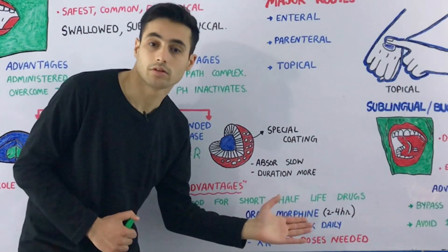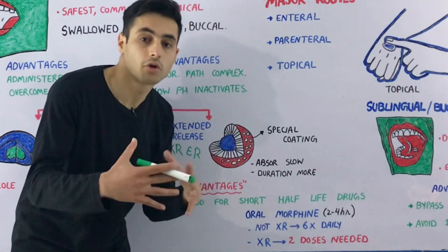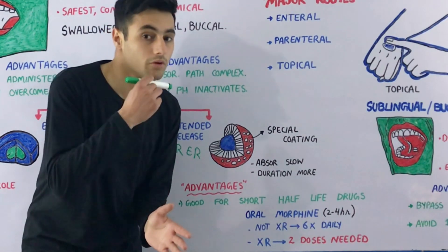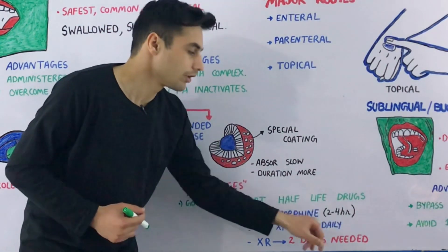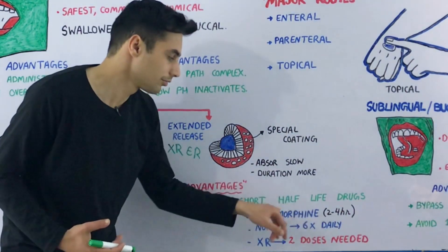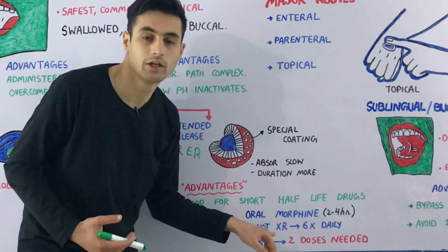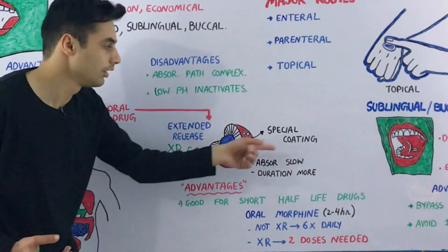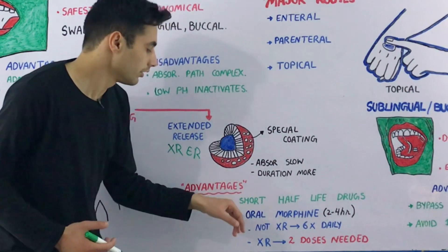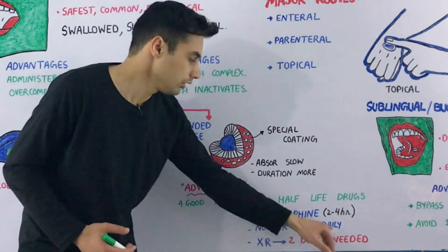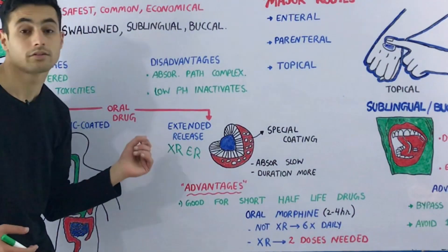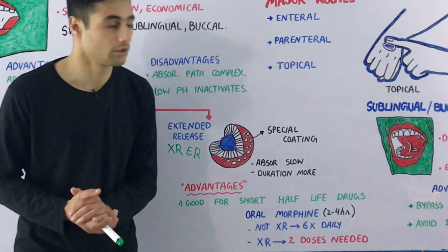The major advantage of extended release medication is that it is good for medicines which have a very short half-life. For example, oral morphine has a half-life of two to four hours, meaning you would have to take it six times daily without the special coating. With the special coating — extended release oral morphine — you only need to take two doses daily.